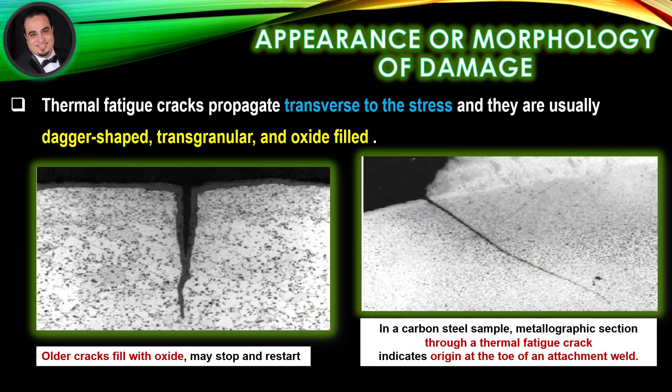Appearance or morphology of damage: thermal fatigue cracks propagate transverse to the stress, and they are usually dagger-shaped, transgranular, and oxide-filled. As illustrated in figures of a carbon steel sample, a metallographic section through a thermal fatigue crack indicates origin at the toe of an attachment weld. Older cracks filled with oxide may stop and restart.